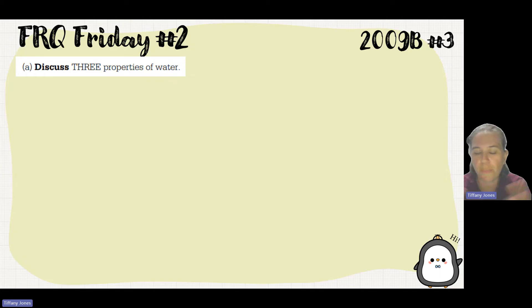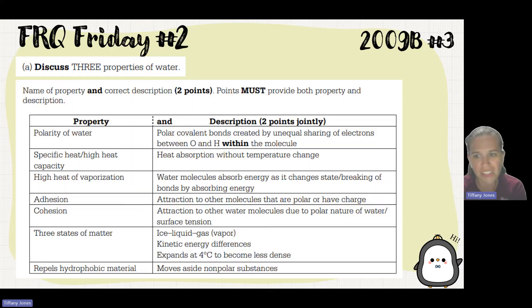When hydrogen bonds become locked in the lattice structure for a solid, there's space in between which causes it to take up more volume, making the density of ice less than liquid water. You can talk about polarity and specific heat.